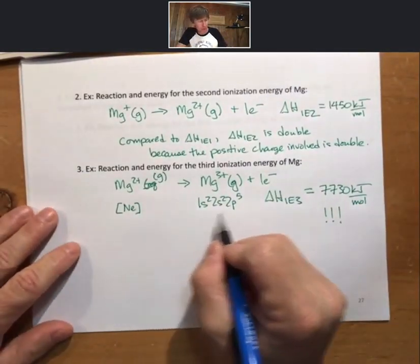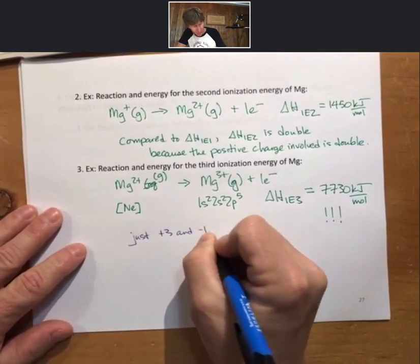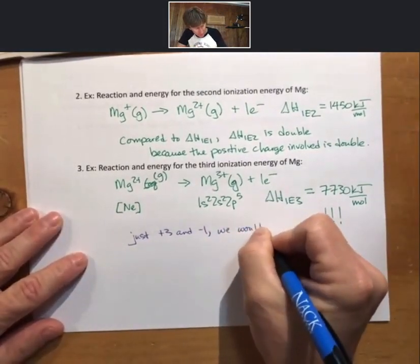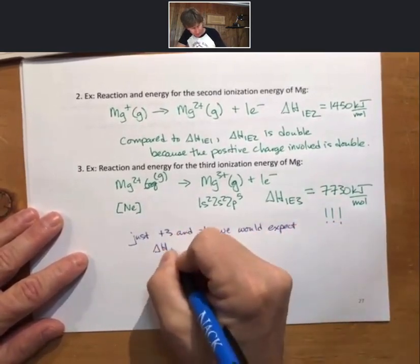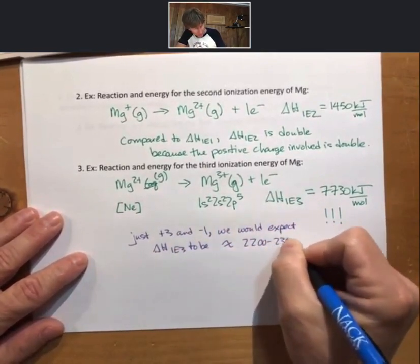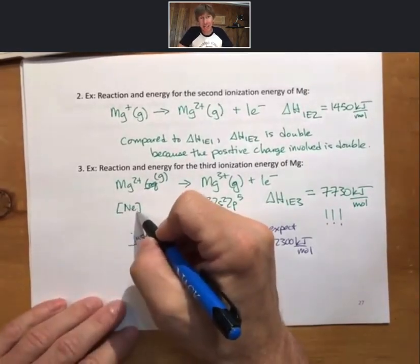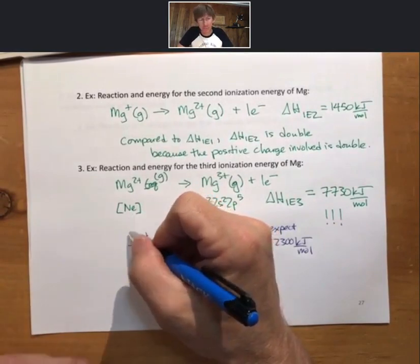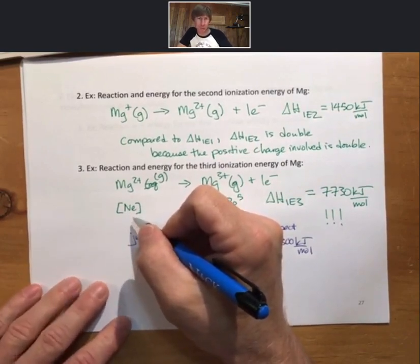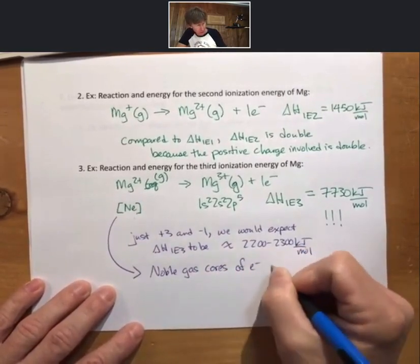We would expect somewhere around 2,300 kilojoules per mole. But it's much larger than that. And the reason is, this is evidence anyway, this is not a justification or a theory as to why. But noble gas cores are, being filled, are extremely stable and extremely hard to break up. Noble gas cores of electron are extremely stable.